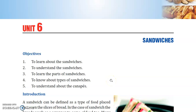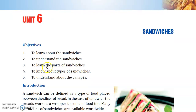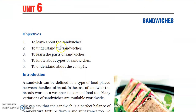Hello and welcome to the Class 10th online food production classes. In this video we will be discussing Unit Number 6: Sandwiches, from the food production book from CBSC. The objectives of this unit are to learn about sandwiches, to understand sandwiches, to learn the parts of sandwiches, and to know about the types of sandwiches.